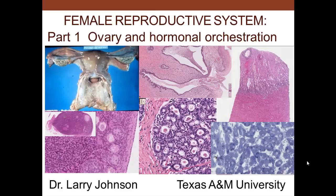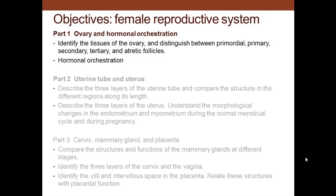The female reproductive system part one: ovary and hormonal orchestration of female reproduction. Part one covers identifying different tissues, distinguishing different types of follicles, and ends with hormonal orchestration of the process. Part two covers the uterine tube and uterus. Part three covers the cervix, mammary gland, and the placenta.